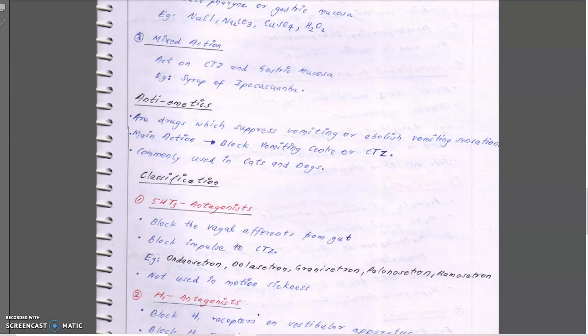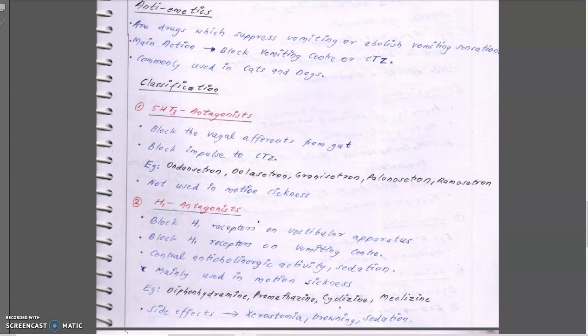Anti-emetics are mainly used in cats and dogs and rarely in horses. The first class is 5-HT3 antagonists. The serotonin receptor present in the vagus nerve and in the CTZ creates the impulse passed to the vestibular nuclei. Blocking the 5-HT3 receptor prevents the sensation of vomiting from reaching the information centers, blocking vagal efferent signals from the gut and impulses to the CTZ. The main drugs are ondansetron, dolasetron, and granisetron — almost all '-setrons' are 5-HT3 antagonists. They are not used in motion sickness as they have no role at the vestibular nuclei.